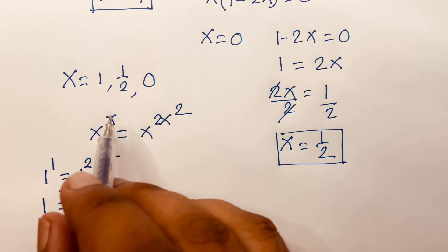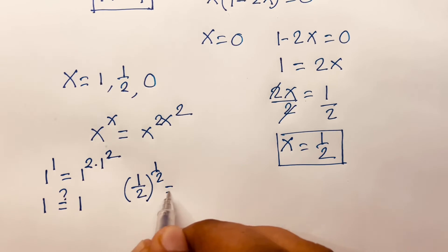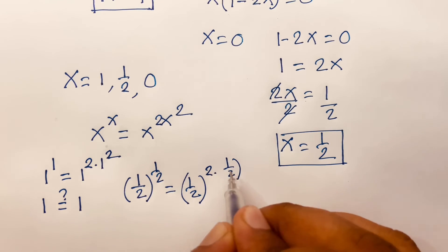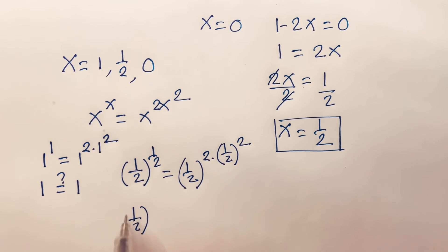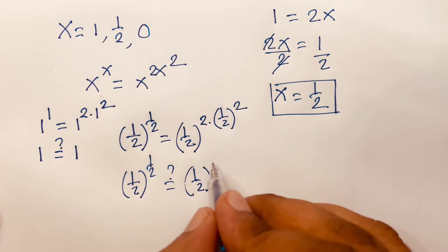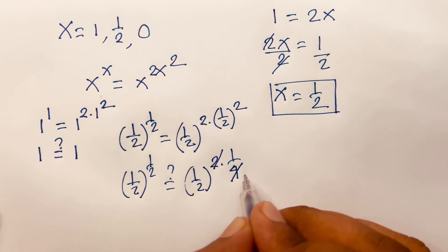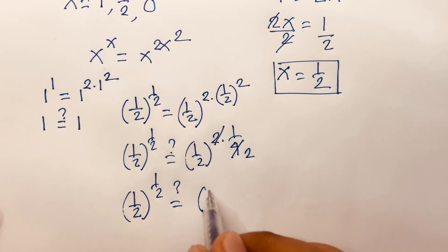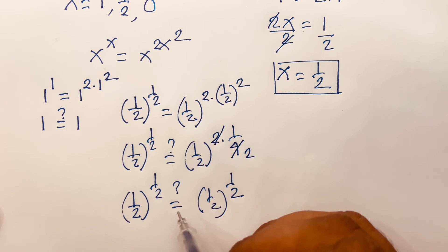For x = 1/2: (1/2)^(1/2) = (1/2)^(2·(1/2)²). The right side becomes (1/2)^(2·(1/4)) = (1/2)^(1/2). So (1/2)^(1/2) = (1/2)^(1/2), which confirms x = 1/2 is also a correct answer.